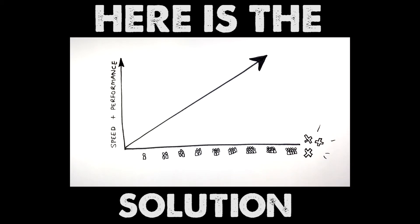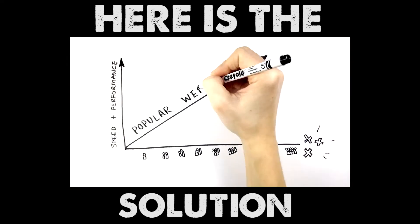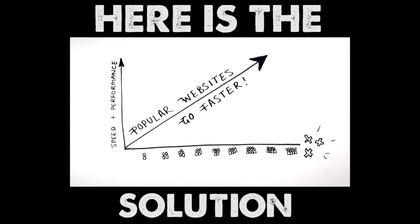In this network, denial of service and similar cyber attacks are thwarted and useless. Popular websites simply go faster rather than crashing. There is a reason this is called logical.